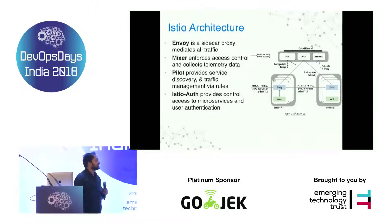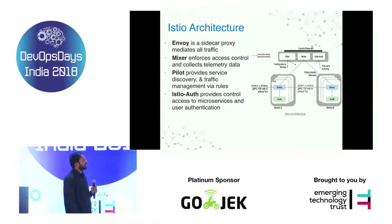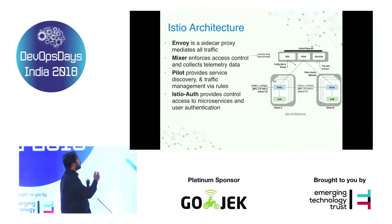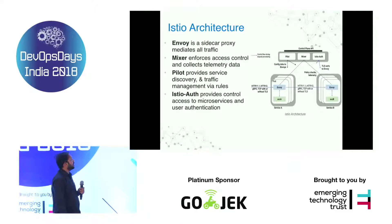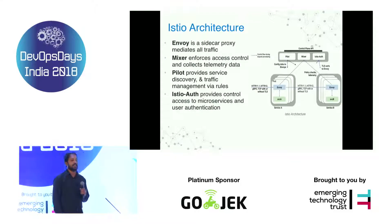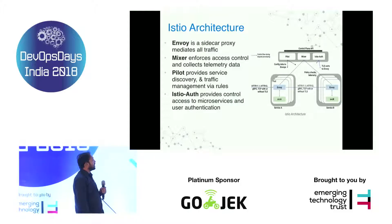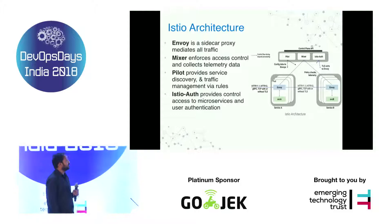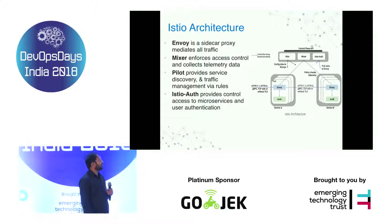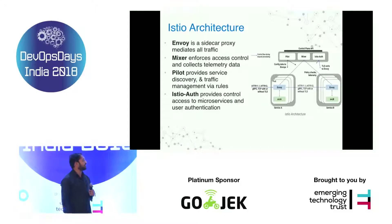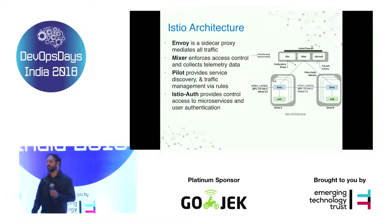Let's look at the architecture of Istio. We have the control plane and data plane in the Istio architecture. The data plane is where Envoy acts as a proxy, running as a sidecar proxy, which takes care of the traffic. We have Mixer, part of the control plane, which enforces access control and collects telemetry data. Pilot provides service discovery and manages traffic. And Istio also takes care of user authentication.